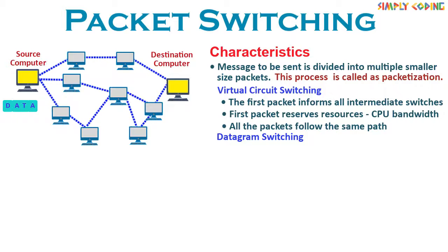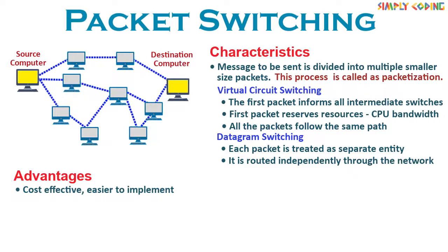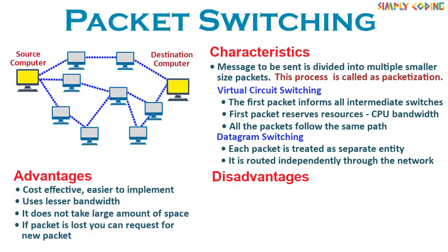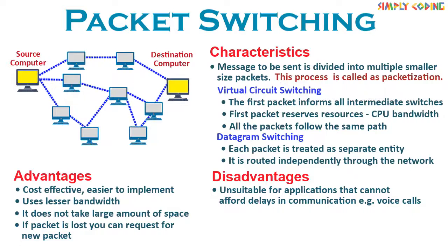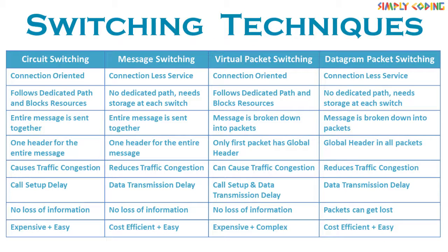In datagram switching, each packet is treated as a separate entity and is routed independently through the network. The advantages of packet switching are that it is cost-effective and easier to implement. It uses lesser bandwidth as packets are quickly routed towards the destination. In case any packet is lost, you can request a new packet. The disadvantages are that packet switching is unsuitable for applications that cannot afford delay in communication like voice calls, it requires higher installation cost, a complex protocol for delivery, and it could lead to network problems such as errors in packets, delay in delivery, or loss of packets.